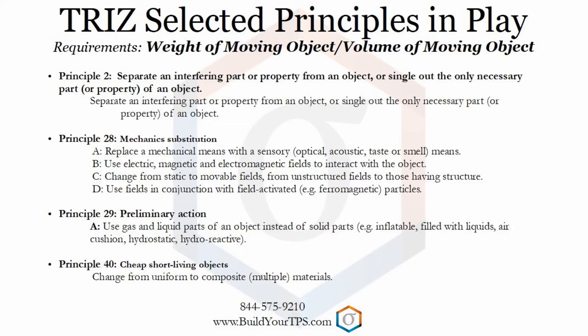Principle 29: Pneumatics and Hydraulics. This principle suggests substituting gas and liquid parts of an object for solid parts. An example might be replacing a solid heavy I-beam with a lighter I-beam containing holes. Another example: the Toyota Prius has the capability of recovering energy used in braking power to power the car, thus requiring less batteries.